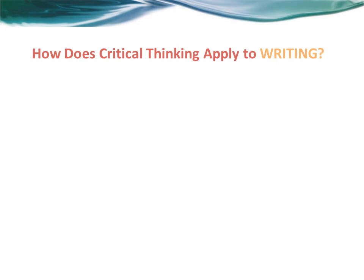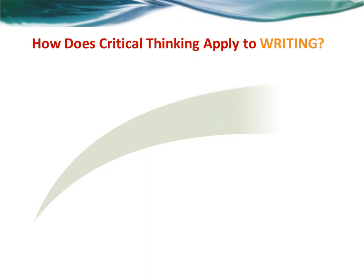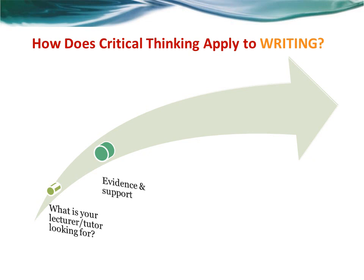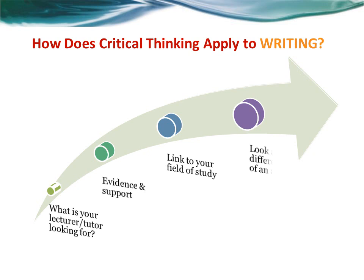Critical thinking applies to writing, too. In order to improve the standard of our writing, we need to think about what the lecturer is looking for. We need to work out what sort of critical thinking will be involved — comparing, problem-solving, looking for cause and effect, or evaluating. We also need to make sure that everything we say is backed up by sufficient evidence and references. We need to link what we're saying into the overall field of the discipline, and think about why this essay topic is worth writing about — what makes it particularly significant. Most importantly, we need to look at different sides of an argument.